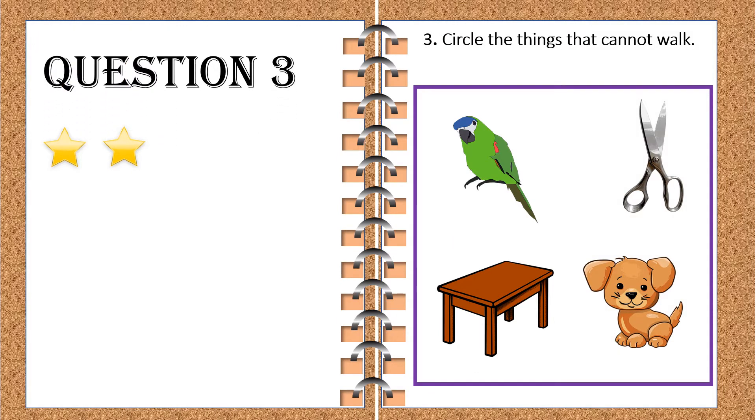Now, let's check the third question. Circle the things that cannot walk. Hmm, interesting. What's the answer? Can we check? Yes. The correct answer is table and scissor. That's right! They cannot walk. But the parrot and the dog can walk because they are living things. Correct? Good! Let's give ourselves one more star.